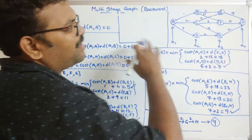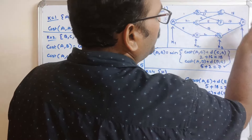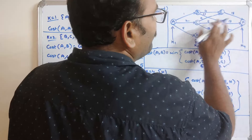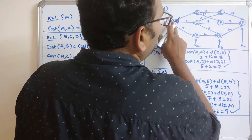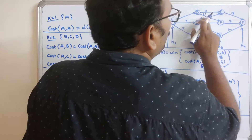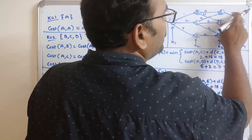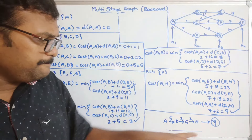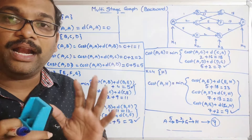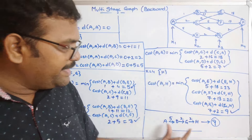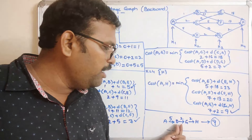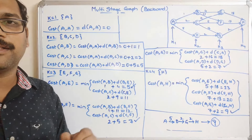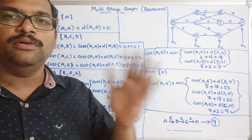We can cross-check by computing all possible paths. A → B → E → H: 1 + 4 + 18 = 23. A → C → F → H: 2 + 5 + 13 = 20. A → C → E → H: 2 + 9 + 18 = 29. All other possible paths give more than 9. Only the path A → D → G → H gives the shortest distance of 9 from source to destination.